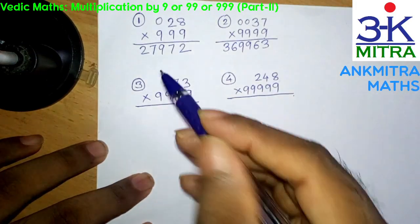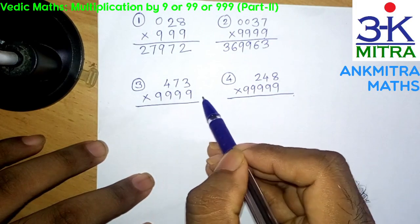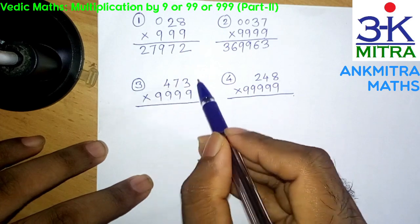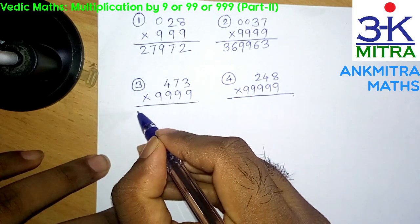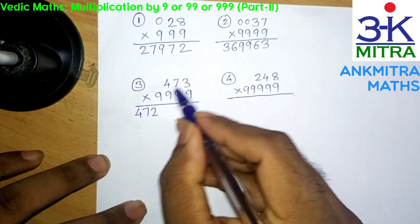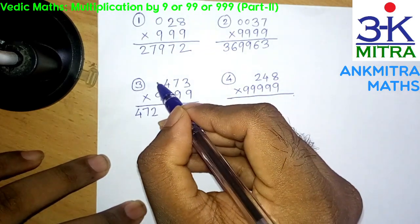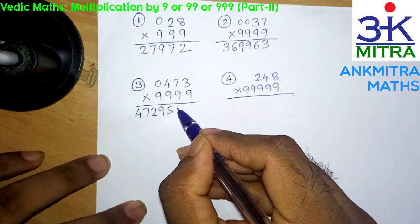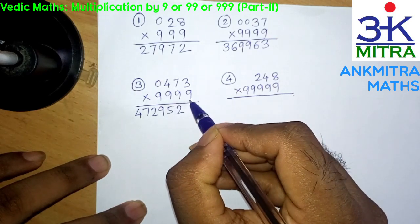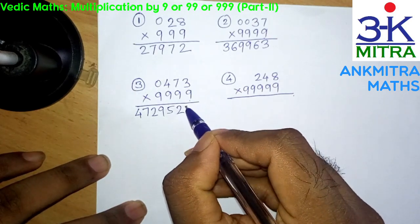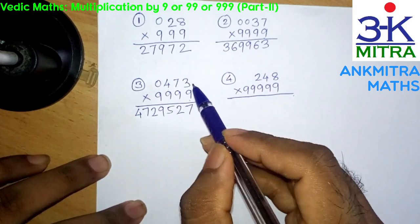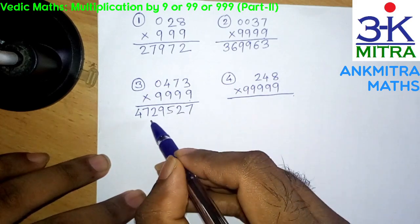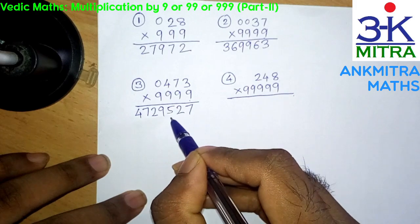Let's look at the third example where we have a 3-digit number multiplied by four 9s, that is 9999. Similarly, we reduce 1 from 473 and write it down to the left — 472. Then imagine a 0 here and start subtracting: 9 minus 0 is 9, 9 minus 4 is 5, 9 minus 7 is 2, and for the final digit it will be 10 minus 3 which is 7. So the final answer for 473 multiplied by 9999 is 47,29,527.